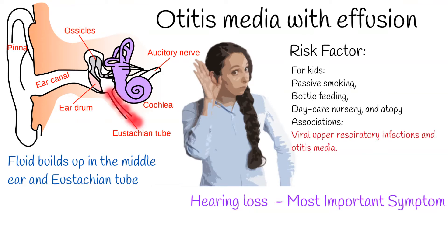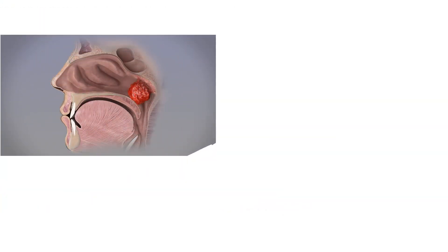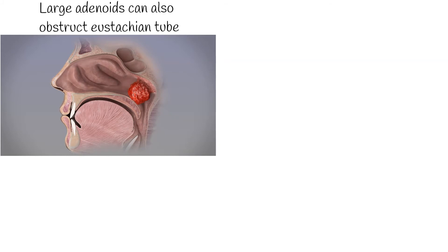A titus media with effusion is a type of a titus media itself, and is more common among children, although it can develop at any age. It is the most common cause of acquired hearing loss in children. In some patients, large adenoids can also obstruct the eustachian tube, resulting in a poorly ventilated middle ear and a titus media with effusion. A titus media with effusion is non-infective in nature, and fluid in the middle ear space is non-infected.